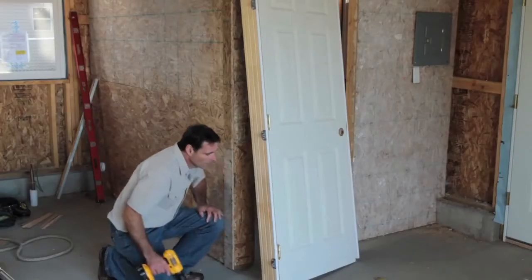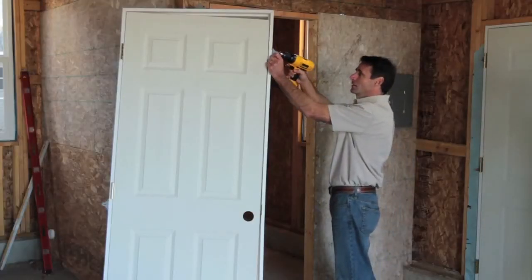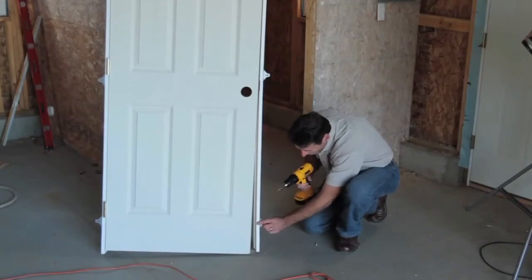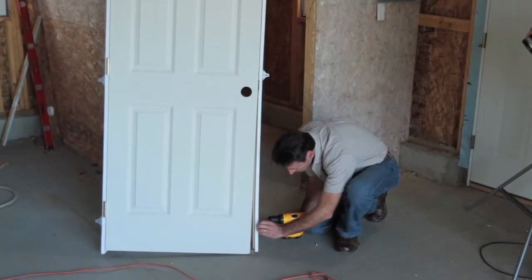You've got three brackets on the hinge side, then use the other three on the latch side. Start your first bracket about 10 to 12 inches down from the top of the jam. The bracket on the bottom should be about six to eight inches up from the bottom, and the one in the middle should be about two inches above the latch hole.